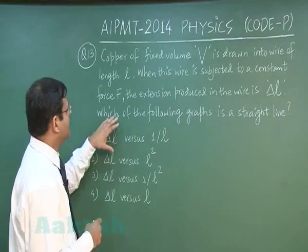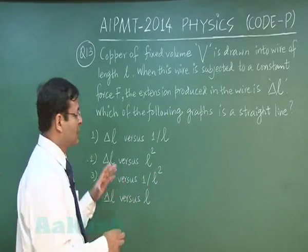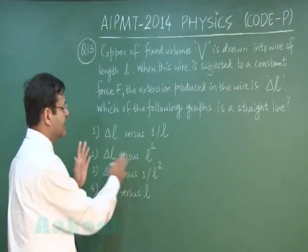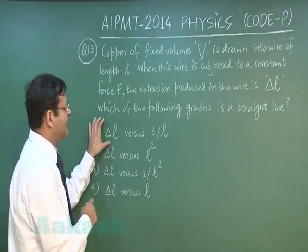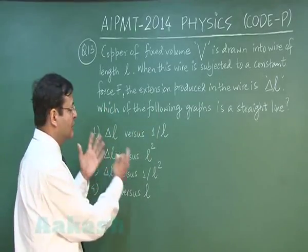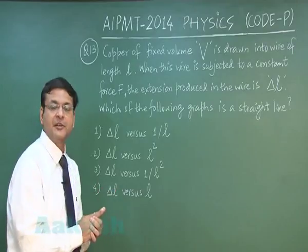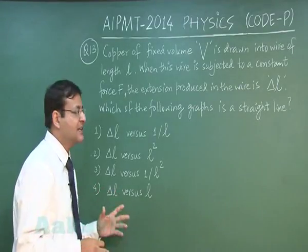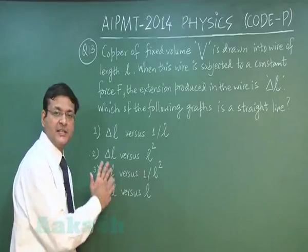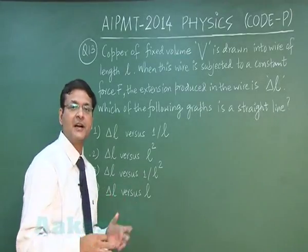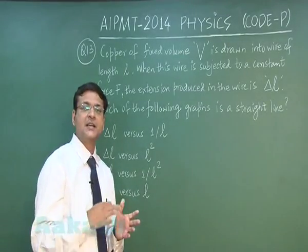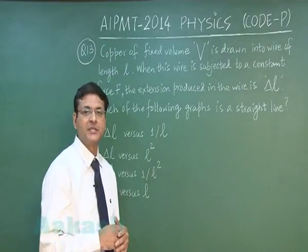So they are demanding which of the following graphs. However the graph is not given, they have said that if say delta L versus 1 by L is plotted then will it be a straight line and so on. So they are demanding which of the following graphs will be a straight line. That means indirectly they are demanding in which case you see that there is direct proportionality between the two quantities plotted.